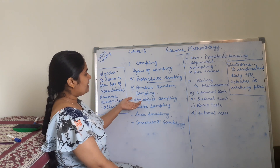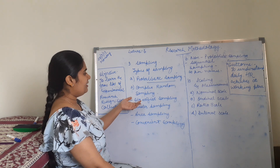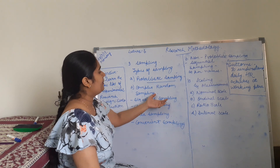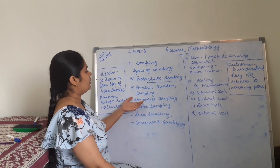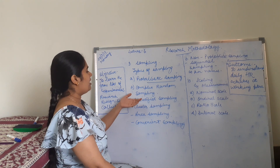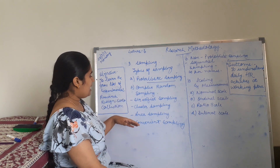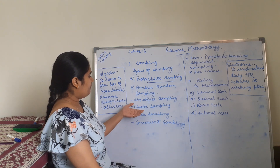In stratified sampling, strata are being divided and sampling is done. For example, Kota, Bundi, Barra, Chalabar — so areas are divided and sampling is done.